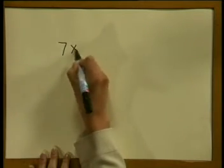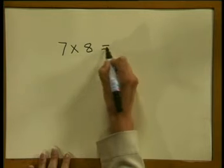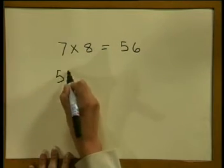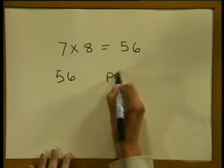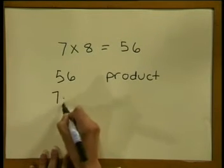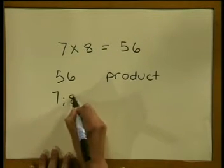So what then is factorization? To factorize means to write a number as a product. What is 7 times 8? We should know it's 56. So notice 56 is our product and 7 and 8 are our factors.